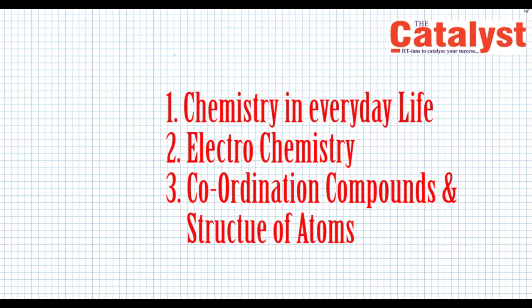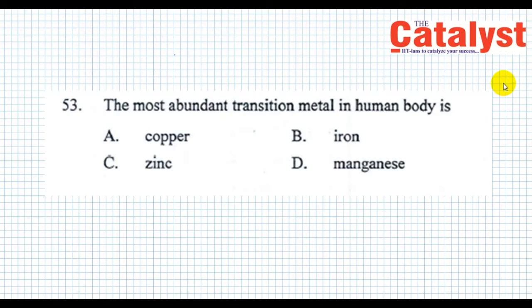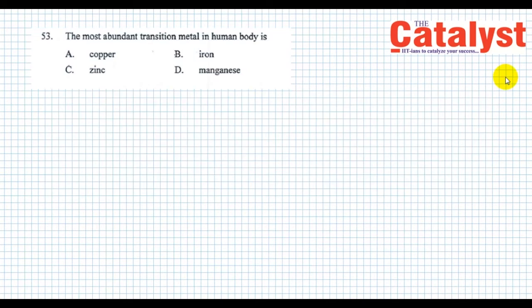Here is question number 53. In this question we shall discuss the importance of transition metals in our biological system. The question is: the most abundant transition metal in the human body is (A) copper, (B) iron, (C) zinc, and (D) manganese. Now let us first get the idea which transition elements are essential for proper functioning of our biological system.